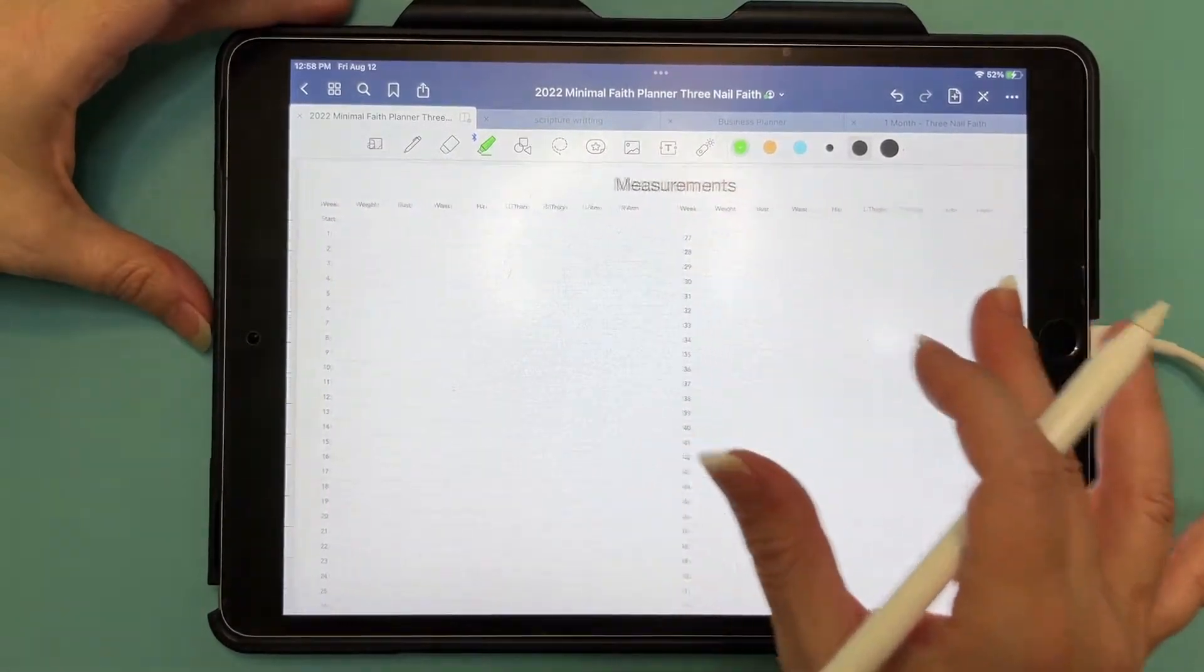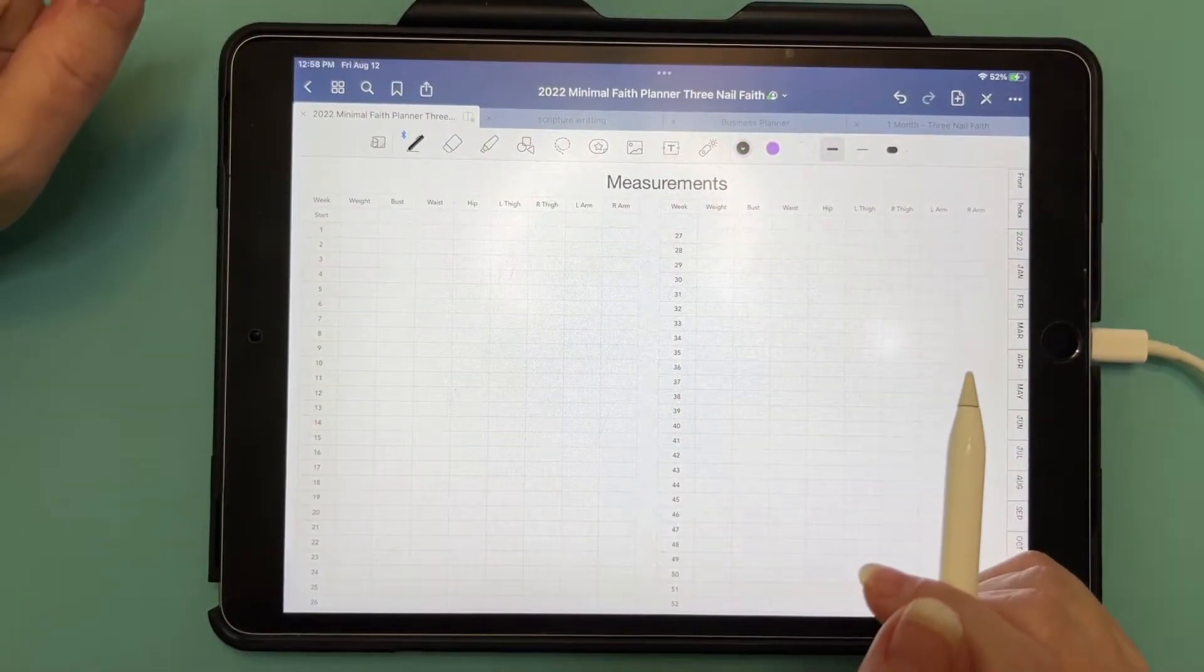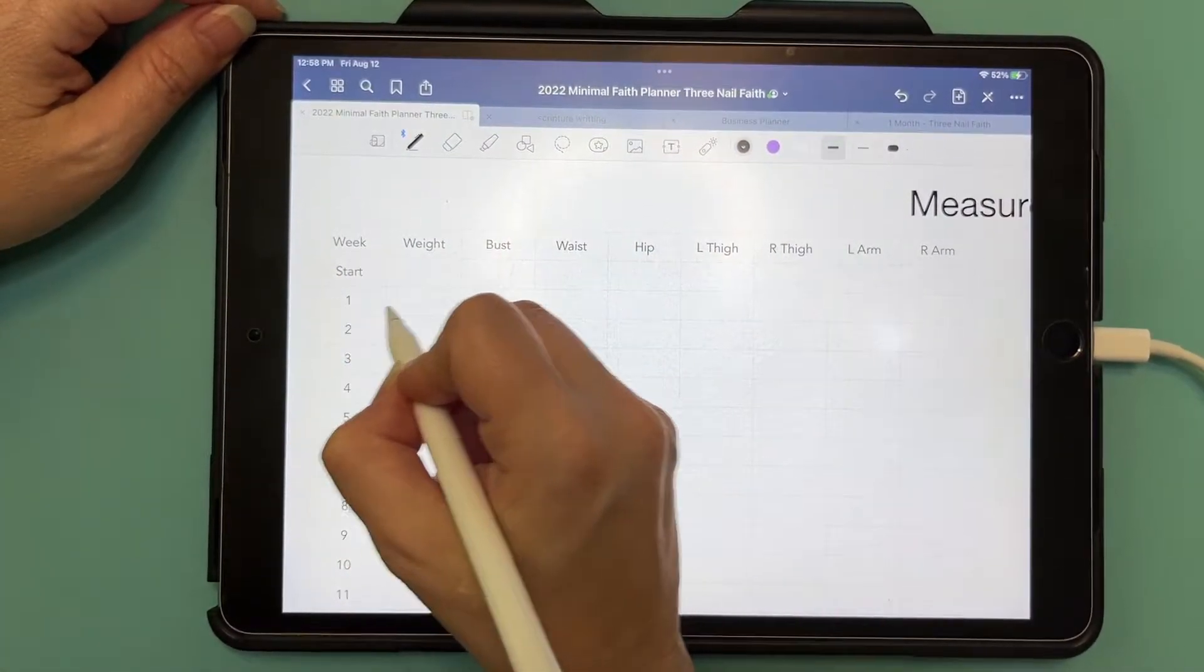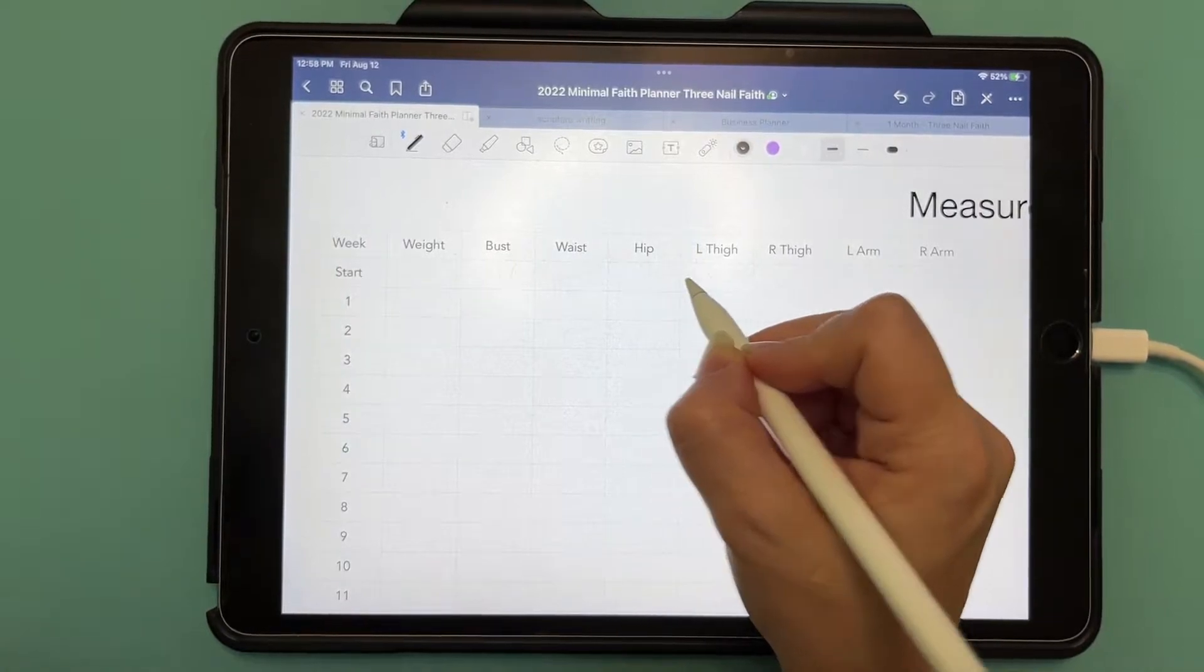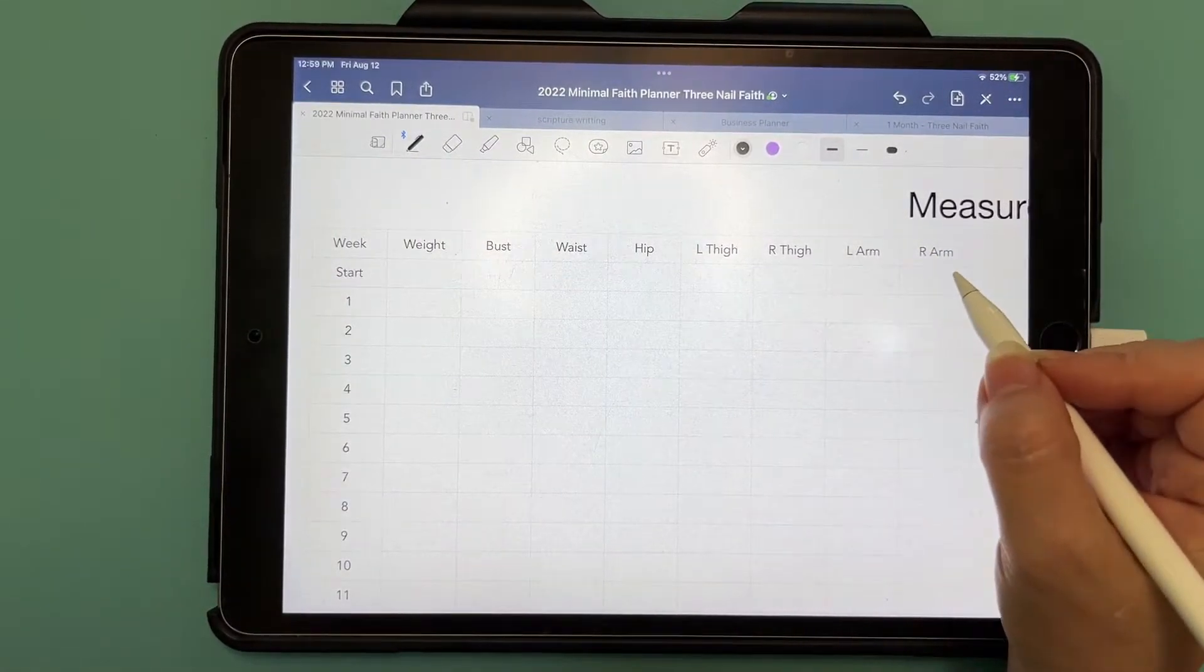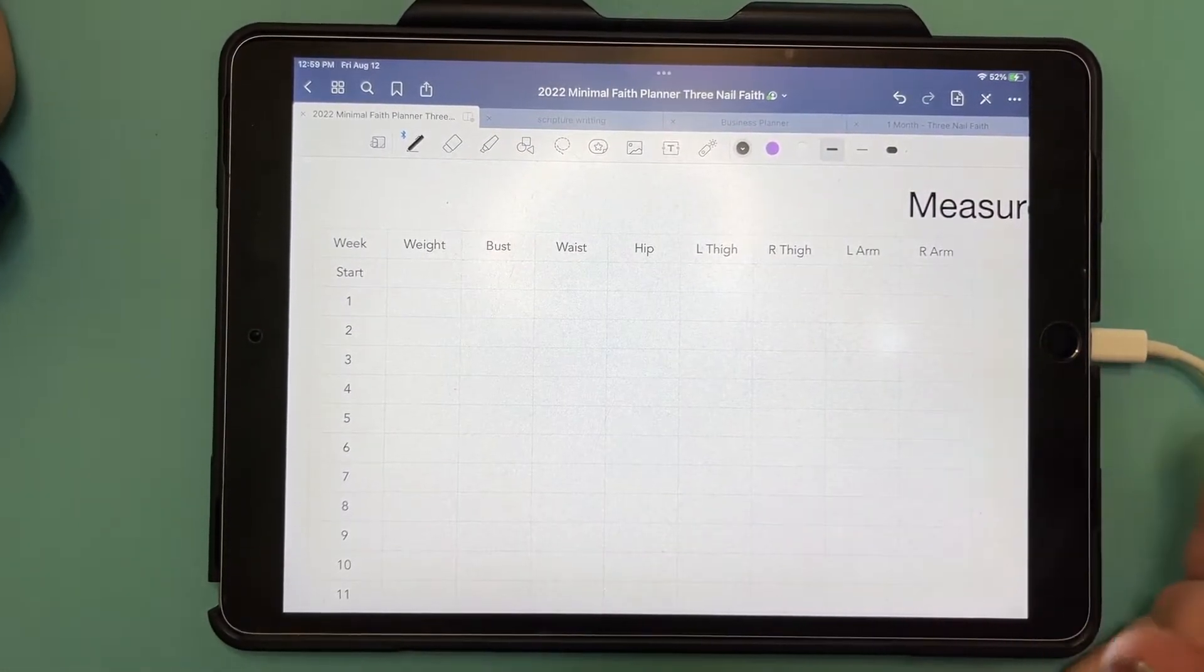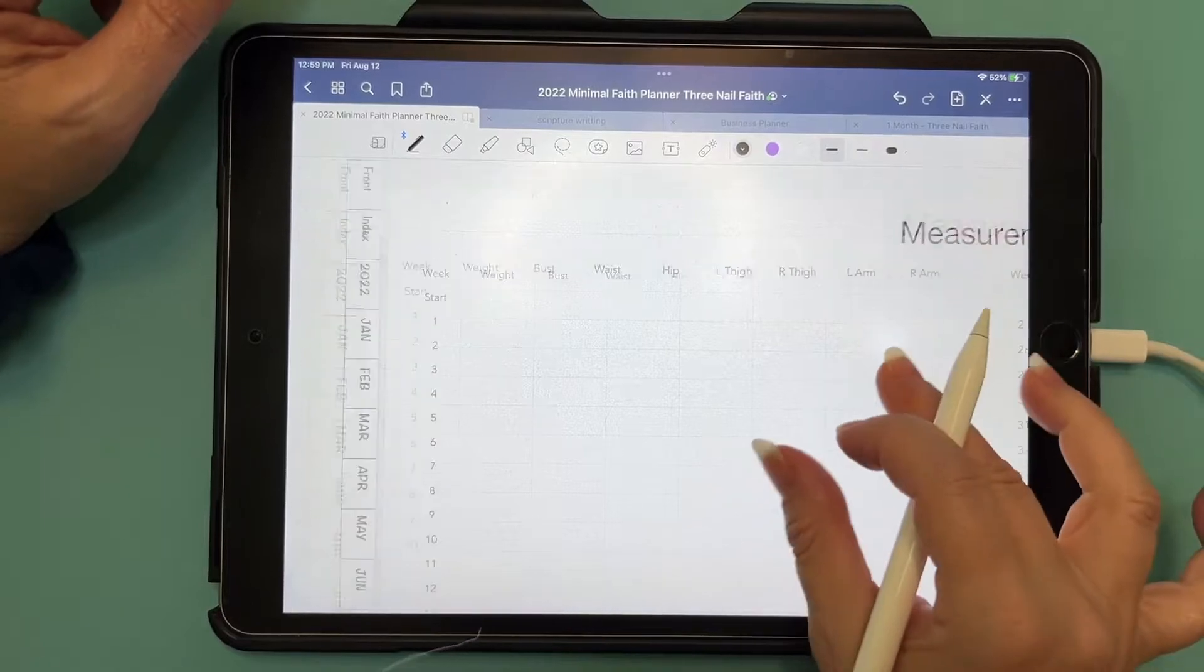And then the last one that I have for the health kind of ones is your measurements. When you're trying to keep up with your weight and trying to do health things, we always want to start with something and then one week later do the next. So we would put in our weight here, our bust measurement, our waist measurement, our hip, our left thigh, our right thigh, our left arm and our right arm. The reason I added the left and the right is for me, they're different. A lot of these trackers just have thigh or arm, and I think that's crazy because mine are different. But I just wanted to include that in my planner.